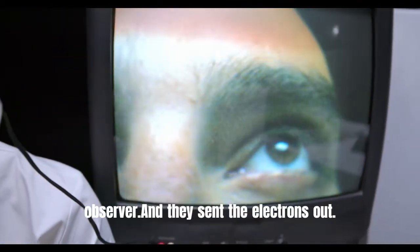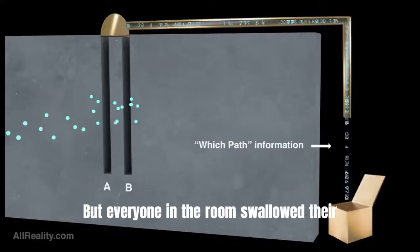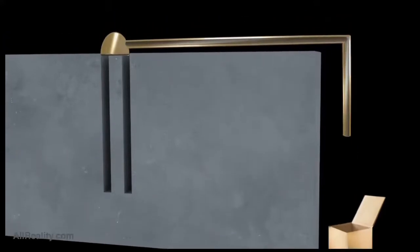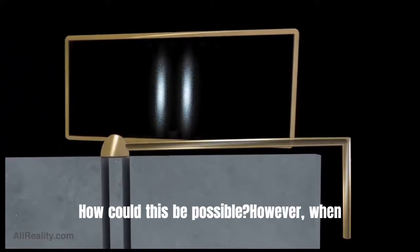They placed the observer and sent the electrons out. But everyone in the room was stunned in surprise. The electrons had created two lines in the background. How could this be possible?